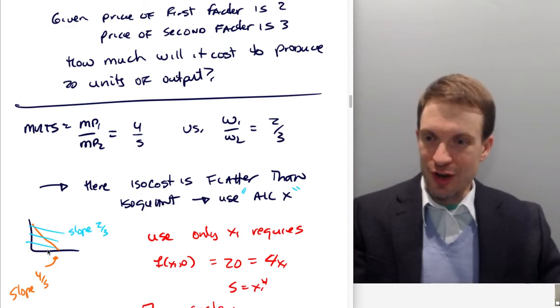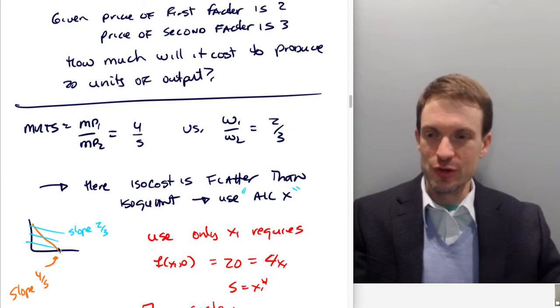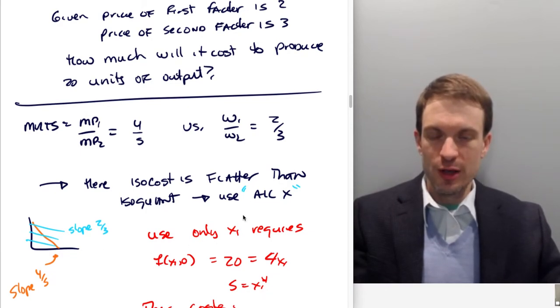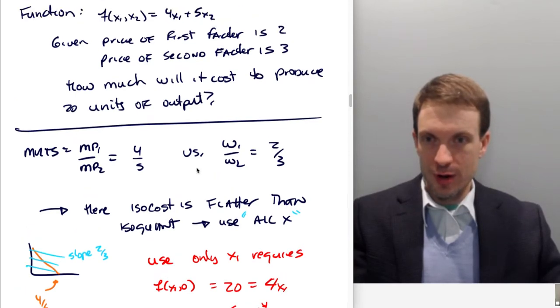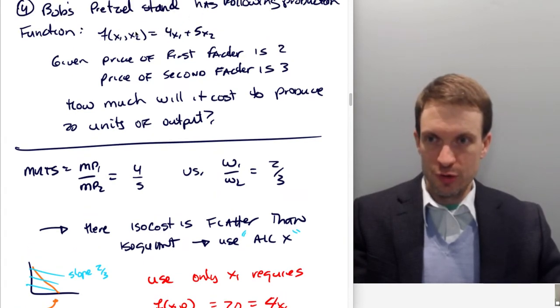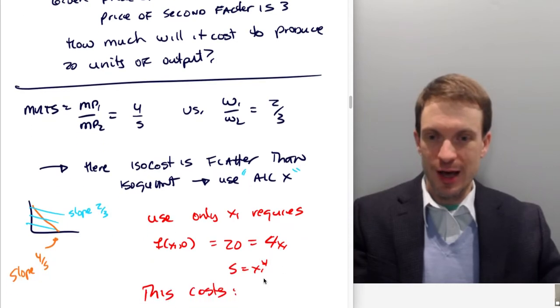With flatter isocost, I didn't draw this very carefully, but who cares? Because we know that we'll just back out what this bundle has to be. So flatter isocost, steeper isoquants means that our solution is going to be down here. It's all x. So we're going to use only x1. In order to produce 20 units of output using only x1, we are going to need 5 units of x1, because our production, so 20 equals 4x1. To get those 20 units, we need to use 5 units of x1.